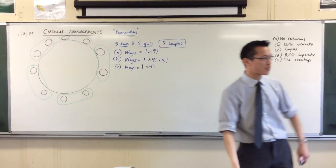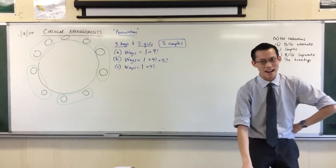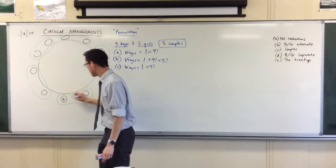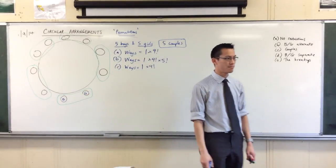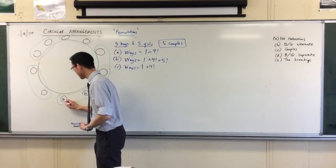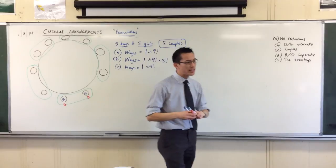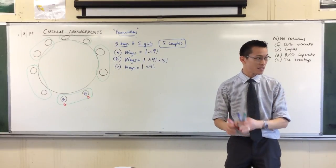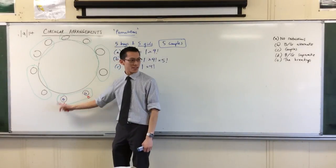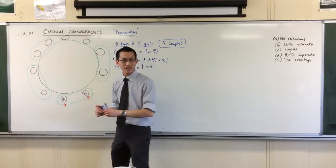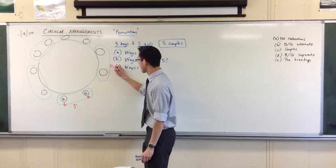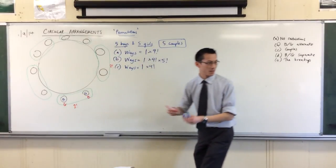But then, of course, there are more arrangements than this, right? Because, for instance, let's have a look at that first couple who we placed. The boy could sit on the left and the girl could sit on the right. Or they could switch. Now, not only can that first couple switch, they can all switch. And there's no problems. So here I have how many ways can I do the boy and the girl together? Answer two factorial. Two factorial ways for that couple. And two factorial ways for this couple. And you're starting to get the idea.